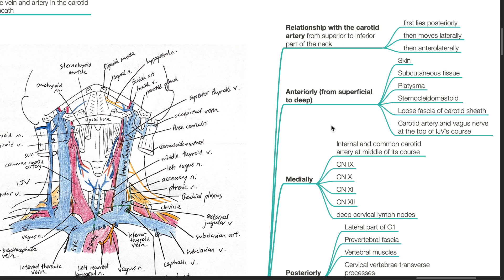Structures anterior to the IJV include the skin, subcutaneous tissue, platysma, sternocleidomastoid, loose fascia of the carotid sheath, the carotid artery, and the vagus nerve at the top of the IJV's course.